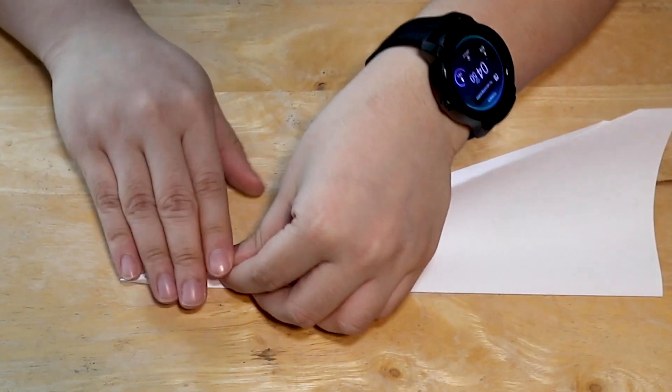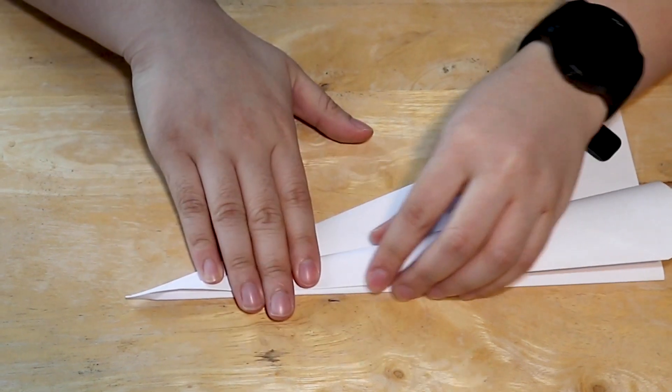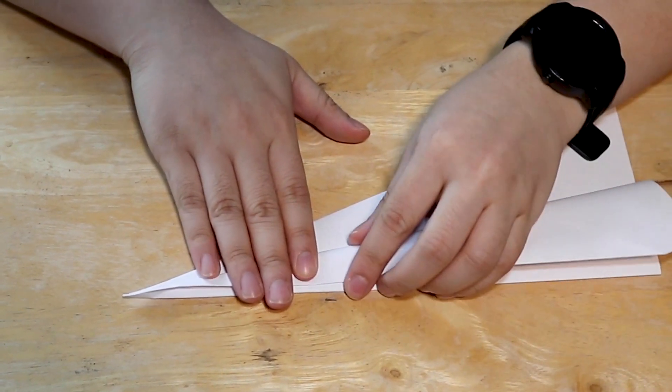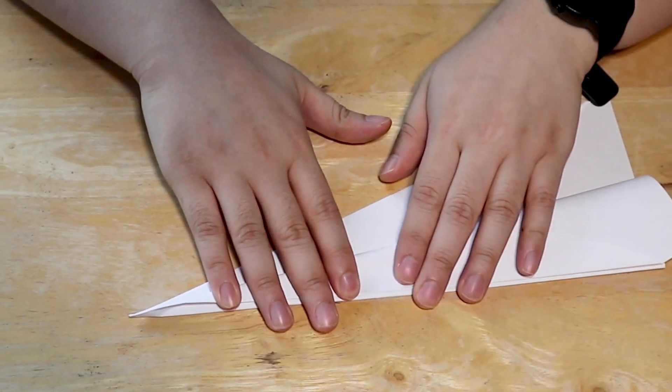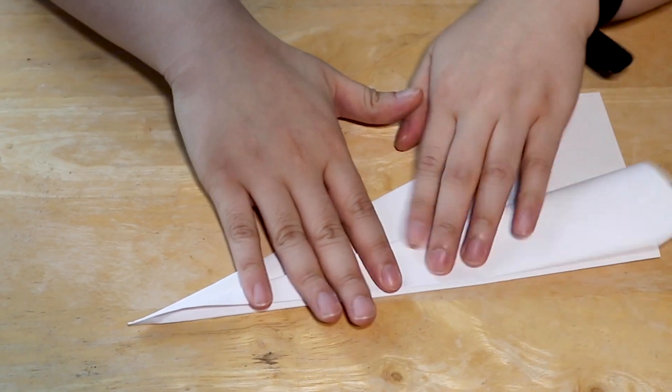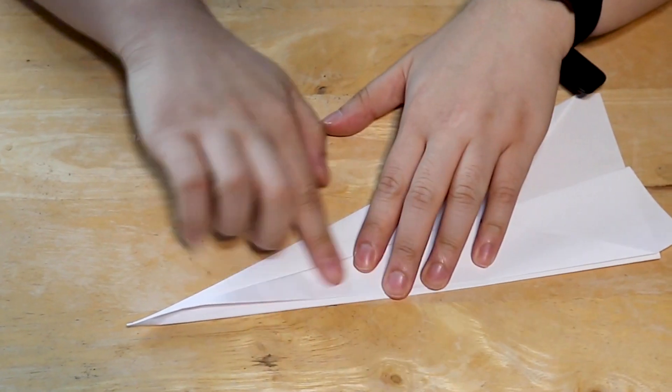Which is, fold this little corner here so it meets the bottom of the airplane. Like that. And do-do-do-do-do! Nice!